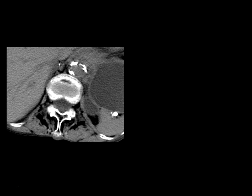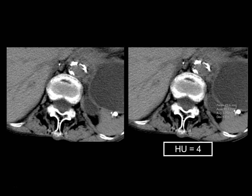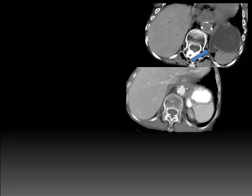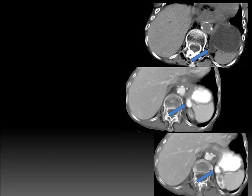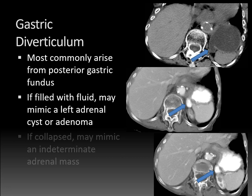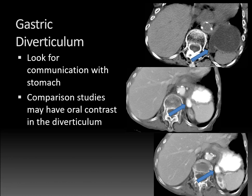Here's another case: a non-contrast CT scan showing an ovoid cystic lesion in the region of the left adrenal gland. Placing a region of interest gives a Hounsfield unit density of 4, consistent with fluid — probably a left adrenal cyst. However, if we look closely, it's actually communicating with the stomach. The patient had a prior study with oral contrast, and you can see oral contrast extending from the stomach into this structure posteriorly. This is typical for a gastric diverticulum. These most commonly arise from the posterior aspect of the gastric fundus. When fluid-filled, they can mimic a left adrenal cyst or even an adenoma. When collapsed, they can mimic an indeterminate adrenal mass. It's key to look for communication with the stomach — even if your current study lacks oral contrast, a prior study with oral contrast can be extremely helpful in confirming the diagnosis.